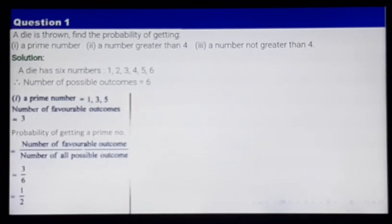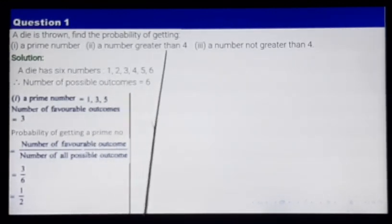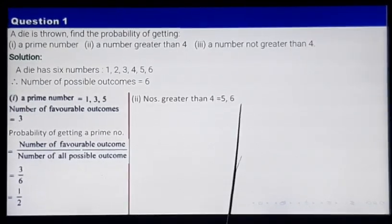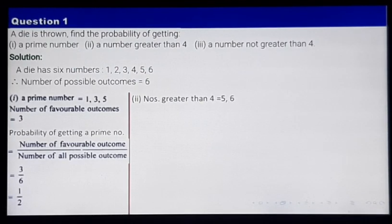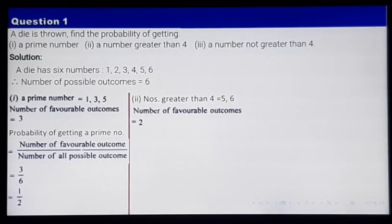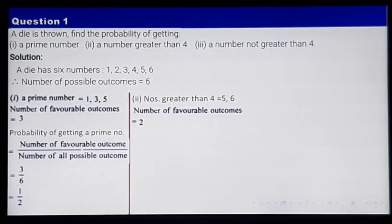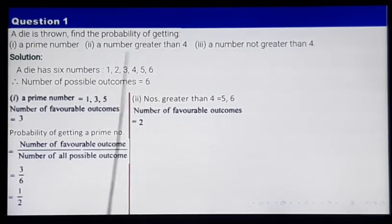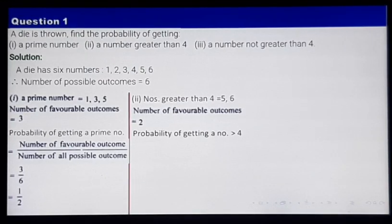Let's go to the second question. In the second question, we have to get a number greater than 4. The numbers which are greater than 4 are 5 and 6 out of these 6. The number of favorable outcomes here is 2. Our aim is to find the probability of getting a number greater than 4.